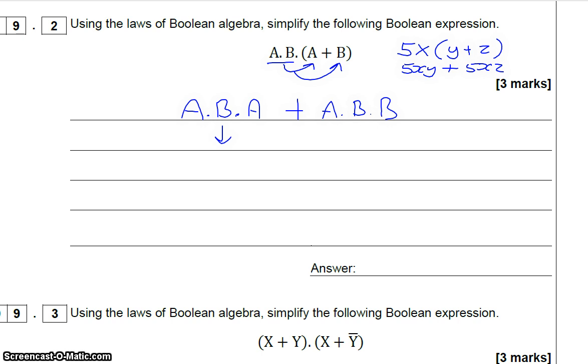We can rearrange it, so this becomes A and A and B, or A and B and B. I always like to put it in alphabetical order. We can then see that A and A is just the same as one single A, so this becomes A and B.